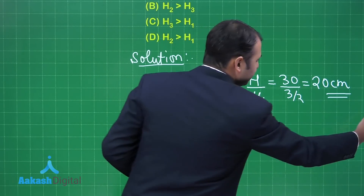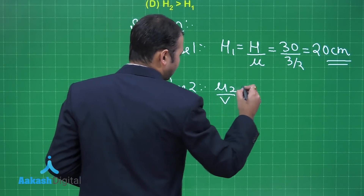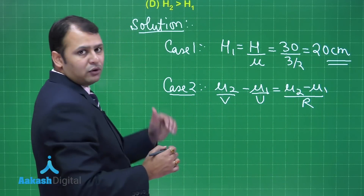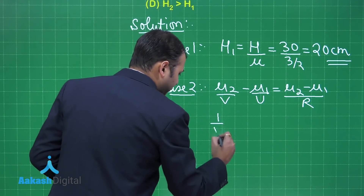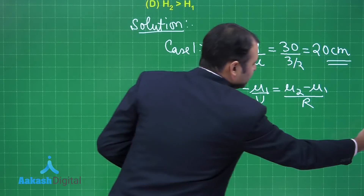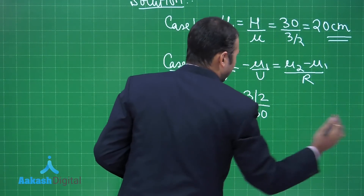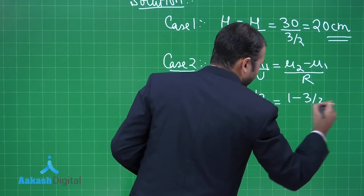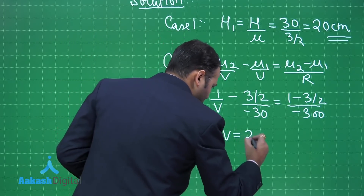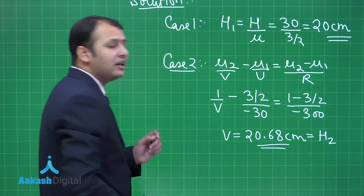For Case 2, this involves a curved surface. The formula for a curved refracting surface is μ₂/v − μ₁/u = (μ₂ − μ₁)/R. The light rays go outside into air, so: 1/v − (3/2)/(−30 cm) = (1 − 3/2)/(−300 cm). The object distance is −30 cm using the upward positive convention. Solving this gives v = 20.68 cm, which equals h2.